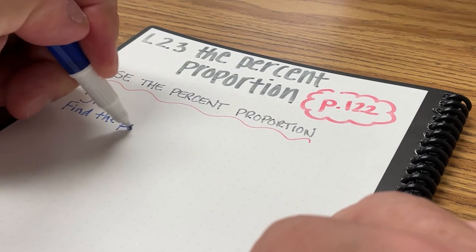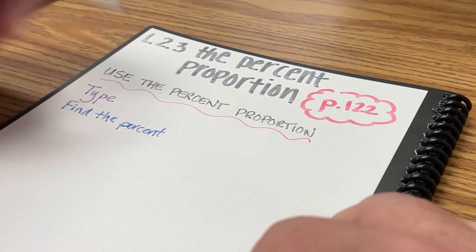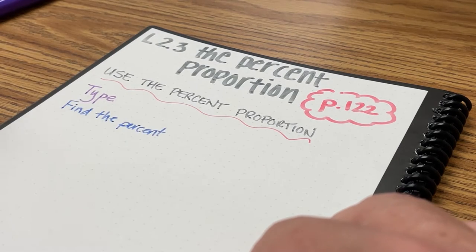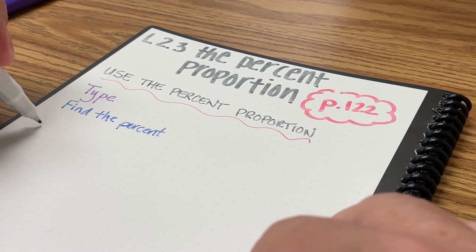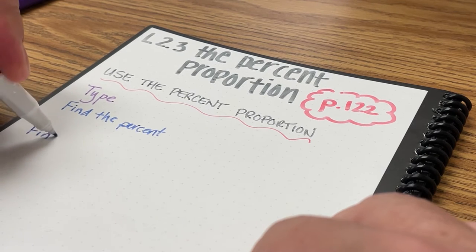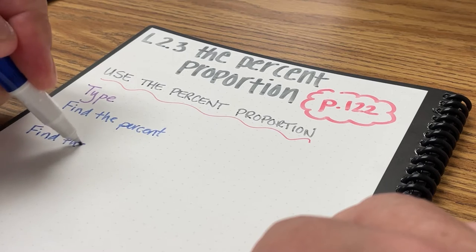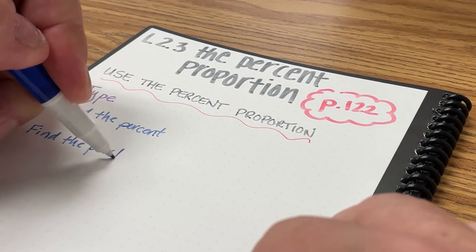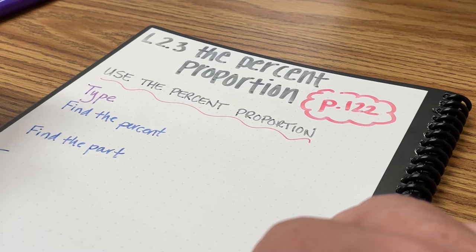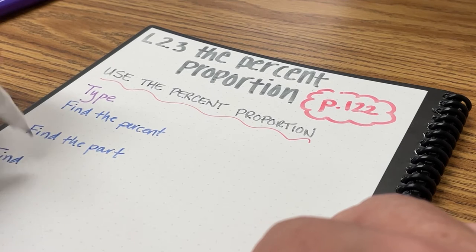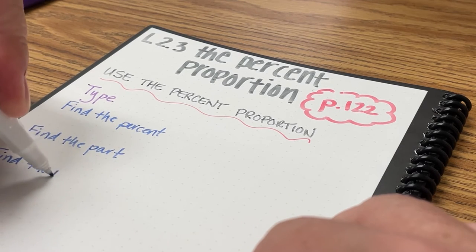The first type is we're going to find the Percent. The next type is we're going to find the Part. And finally, we're going to find the Whole.